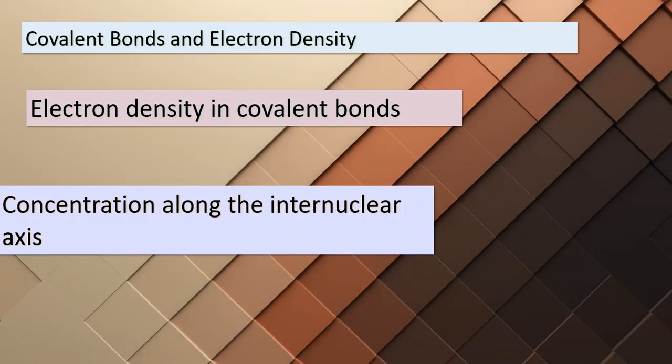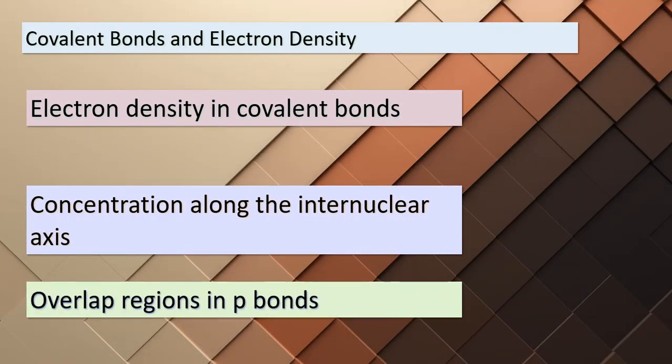Today our journey delves deeper into the world of chemical bonding, particularly focusing on covalent bonds and their fascinating characteristics. In the covalent bonds we've explored so far, the electron density is uniquely concentrated along a specific path — the line that connects the nuclei of the bonded atoms. This line is known as the internuclear axis.